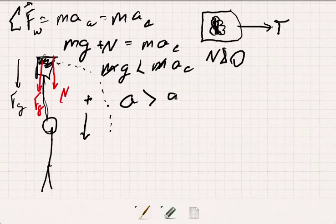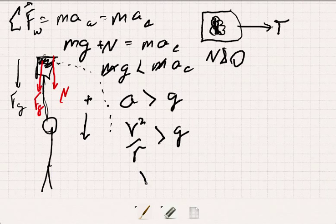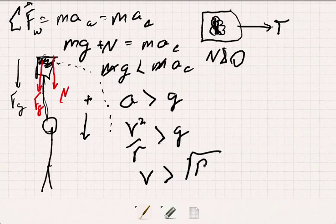And we like the masses to cancel. And we say, the acceleration must be greater than gravity. And the acceleration is v squared over r, must be greater than gravity. And so the condition on how fast it's going would have to be v is greater than the square root of rg.